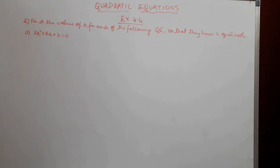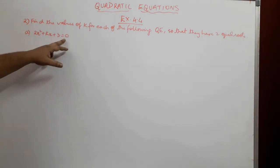The second question says find the values of k for each of the following quadratic equations so that they have two equal roots. We have been given a problem here: 2x² + kx + 3 = 0.